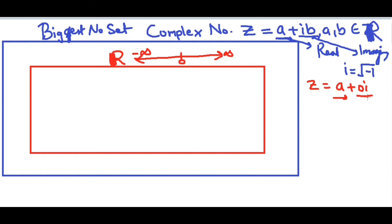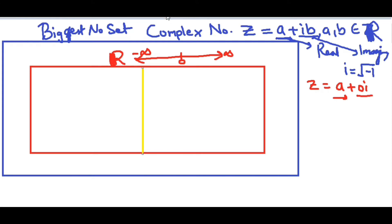Within the real numbers, we also have a division into two types of numbers. The first is your irrational number and the second is the rational number.